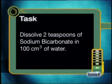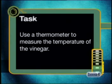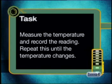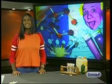Here is a set of instructions for you to follow. Dissolve two teaspoons of sodium bicarbonate in about 100 cm³ of water. Add 25 cm³ of vinegar to 25 cm³ of water to dilute the vinegar. Use a thermometer to measure the temperature of the vinegar. Add 1 cm³ of the sodium bicarbonate solution, stir, and measure the temperature. Repeat this until the temperature changes, then plot a graph and find the end point. Remember to report back to your class on any unusual observations.